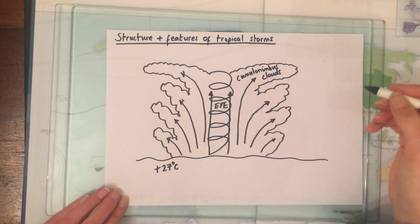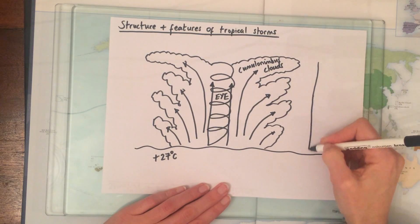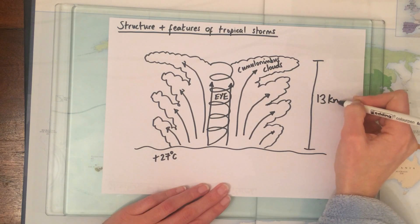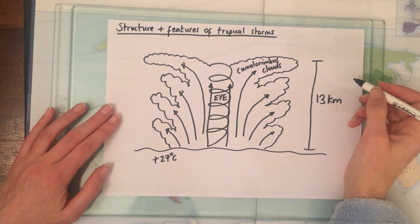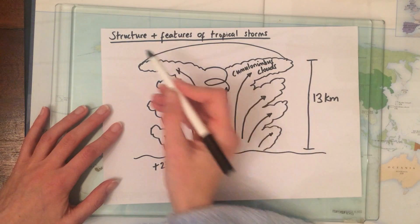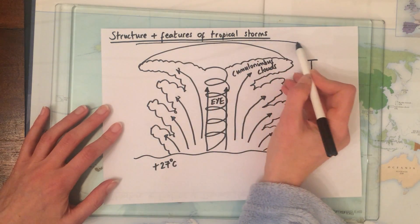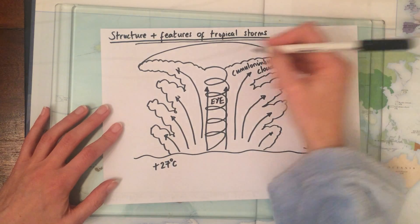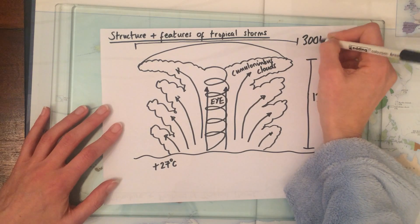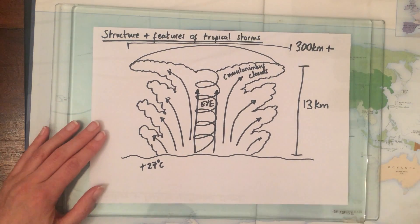These cumulonimbus clouds can extend 13 kilometres upwards in height. The actual width of the storm, from one side all the way across to the other, can be in the region of around 300 kilometres wide — maybe even bigger.